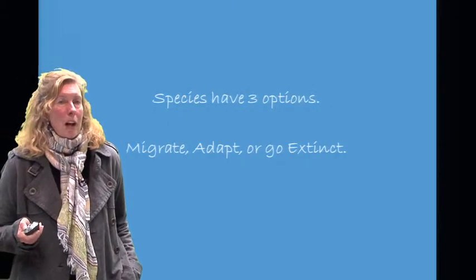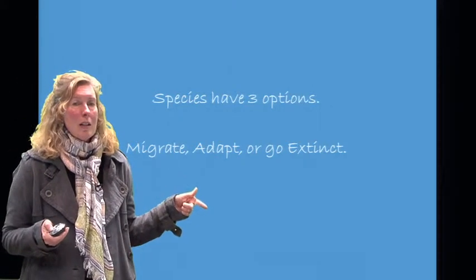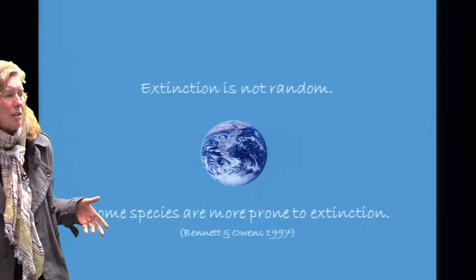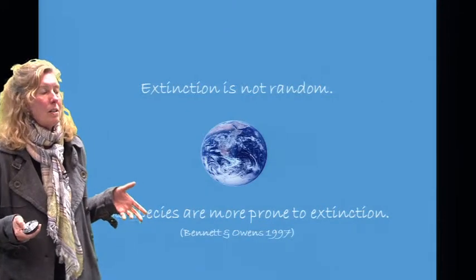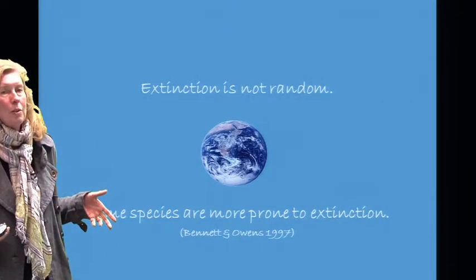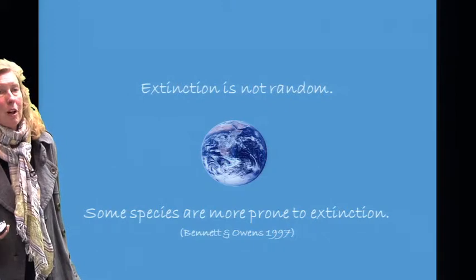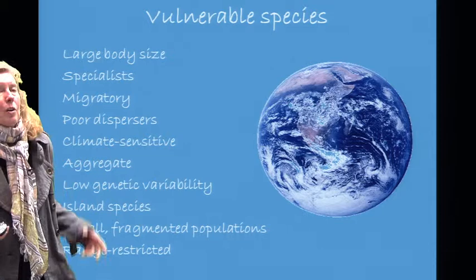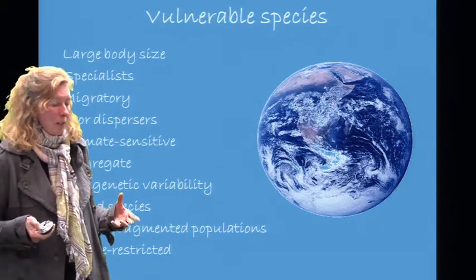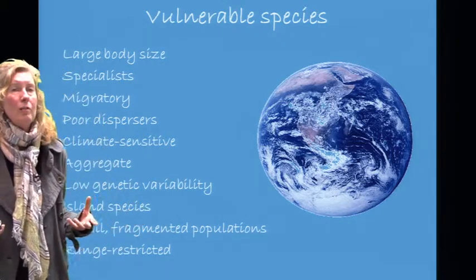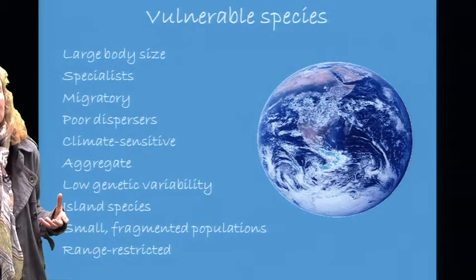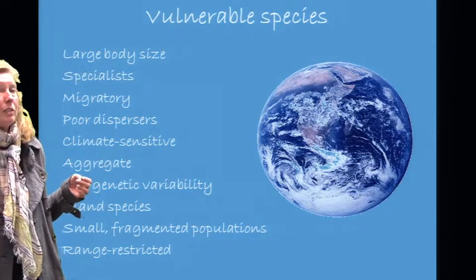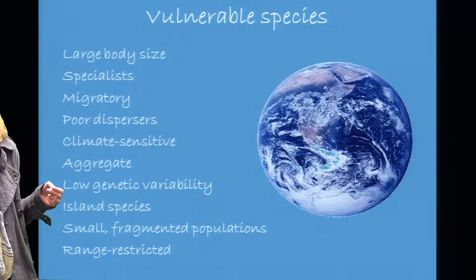Species effectively have three options: they can migrate, they can adapt, or they can go extinct. Extinction is not random — some species are more prone to extinction than others, primarily due to traits. Biologists have compiled a list of traits that make species particularly vulnerable to extinction, such as large body size, being a migratory species, being climate sensitive, or being an aggregate species.